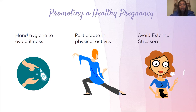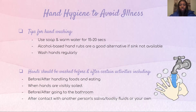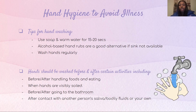We'll also discuss participating in physical activity and avoiding external stressors. You can avoid infections by practicing hand hygiene. Tips for that would be to use warm water and soap for 15 to 20 seconds when washing your hands, and to wash your hands frequently — especially when you come in contact with a lot of things. If you're not near a sink, alcohol-based hand rubs are also good. Wash your hands before and after handling food, when your hands are clearly soiled, such as after gardening, before and after going to the bathroom, and if you come in contact with another person's body fluid or saliva — so after you blow your nose, make sure you wash those germs off.